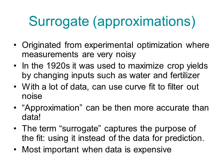We call the curve that we fit the surrogate or approximation. Its use originated from experimental optimization where measurements are very noisy. In particular, it was used by extension stations like the one at the University of Florida to maximize crop yields by changing inputs such as water and fertilizer. You basically take a field and divide it into subplots, and on each one you vary the inputs and then wait several months to see what the crop will be.